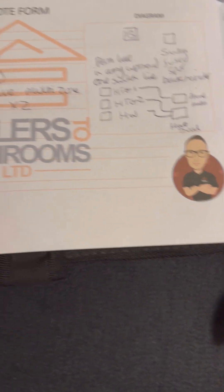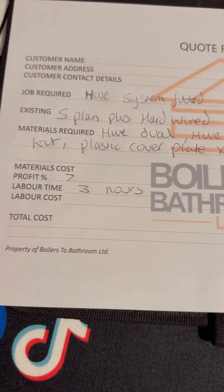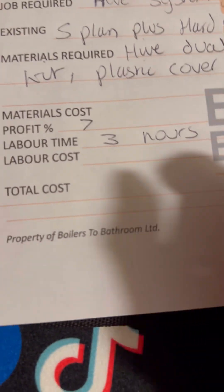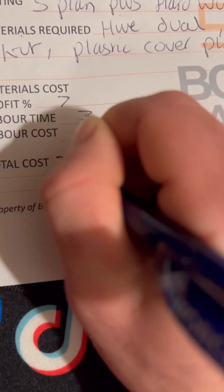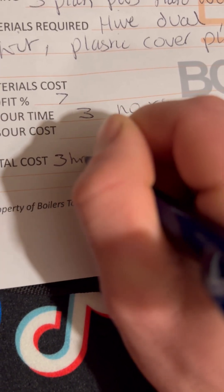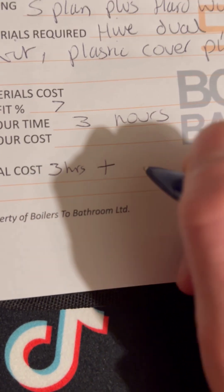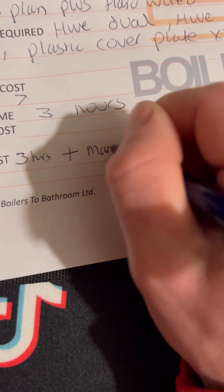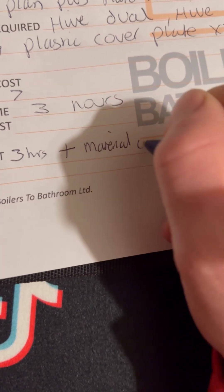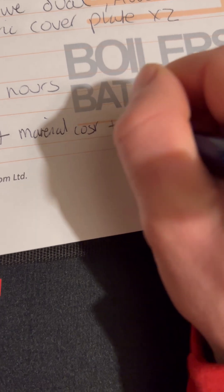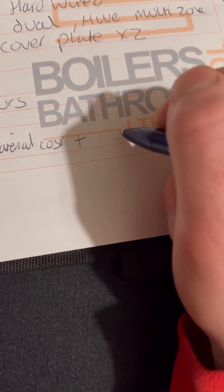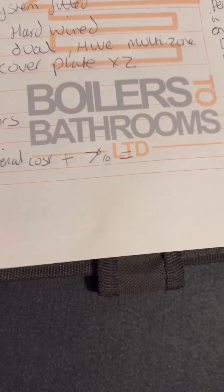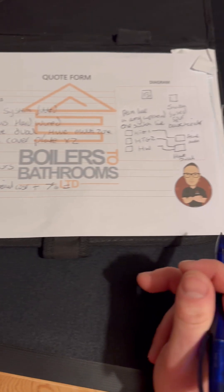Essentially we've worked out that we don't need to get cables from anywhere else - we can get everything we need from in that airing cupboard. The formula you can use to come to the total is: labour time (three hours) plus materials, plus whatever percent your profit margin is, and that'll give you a quote total. That's another one done - happy days!